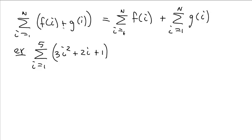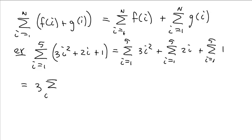So, because of this rule, we can add them separately. This is the same thing as the sum i equals 1 up to 5 of 3i squared plus the sum i equals 1 up to 5 of 2i plus the sum i equals 1 up to 5 of just 1. Because we can pull constants out front, this is 3 times the summation i equals 1 up to 5 of i squared plus 2 times the summation of i equals 1 up to 5i plus, well, this one we know, this is a constant. We add 1 plus 1 plus 1, 5 times, it's 5 times 1, it's 5.